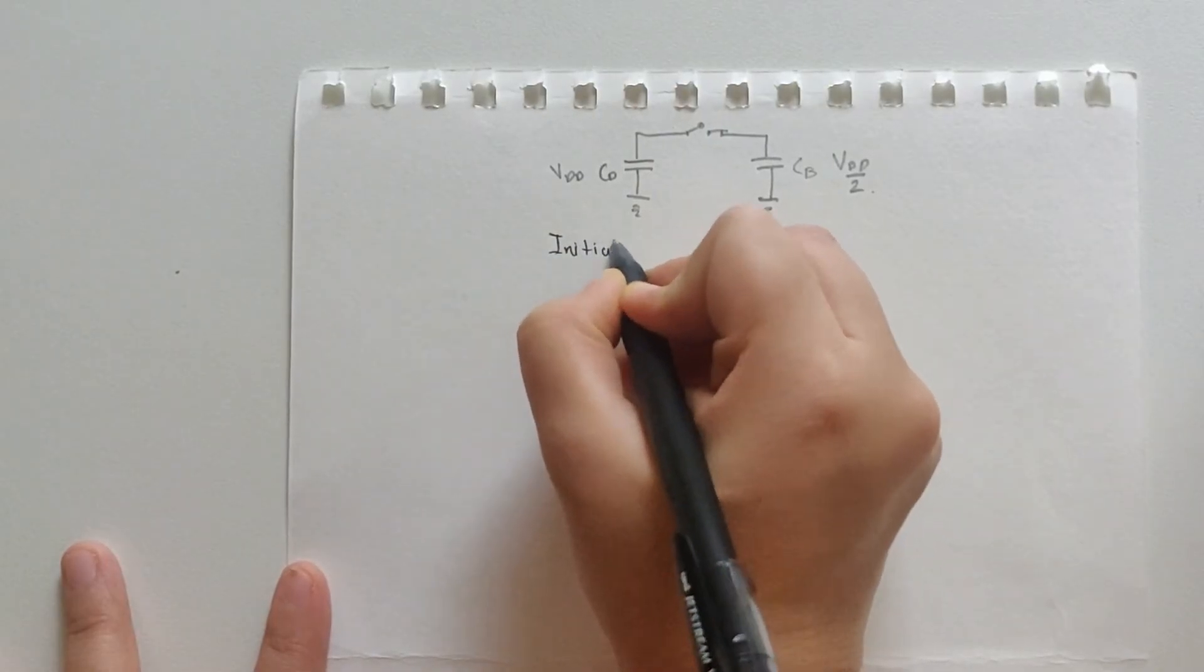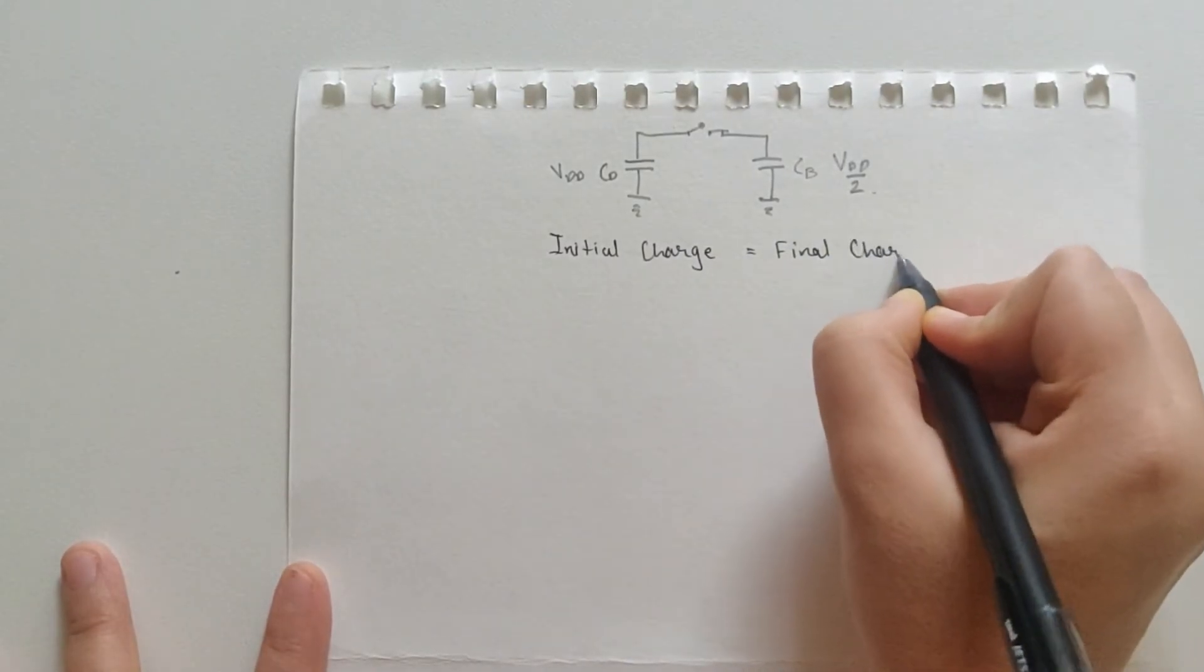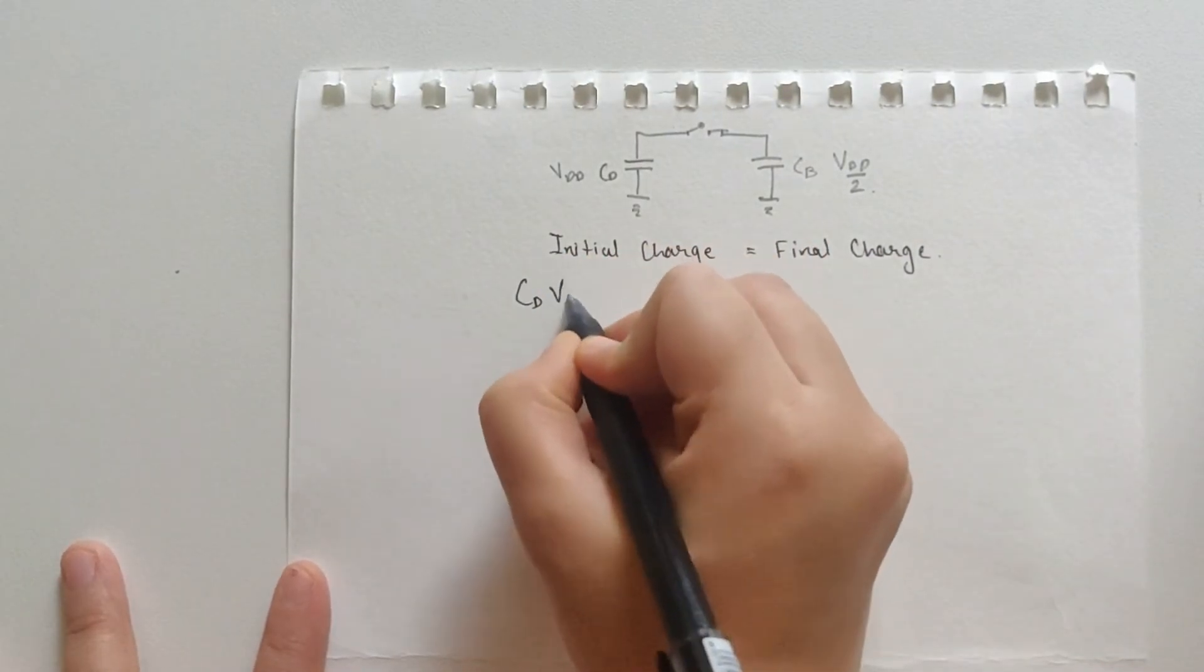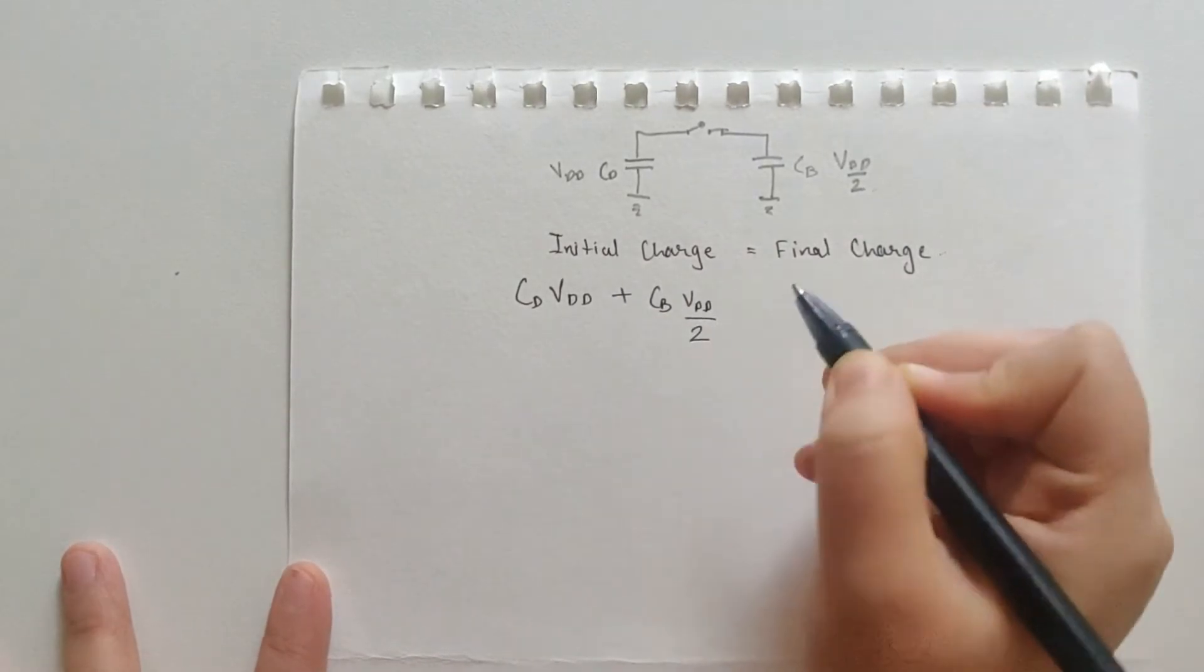Now, the total charge is conserved. So, we can conclude that initial charge is equal to final charge or the charge lost by the cell capacitor equals to the charge gained by bit line capacitor.